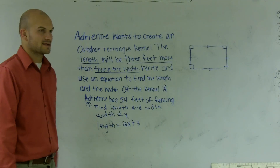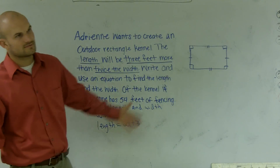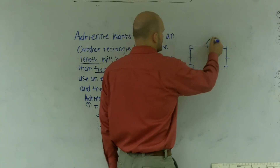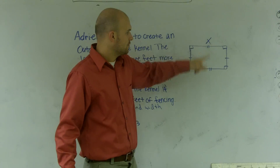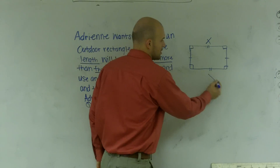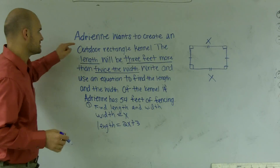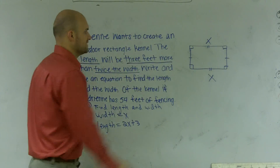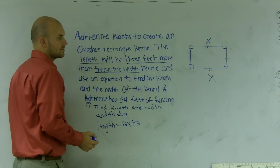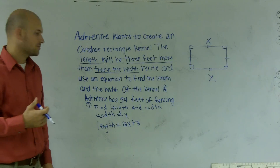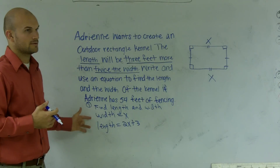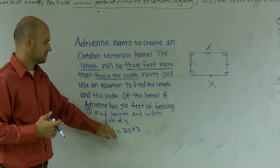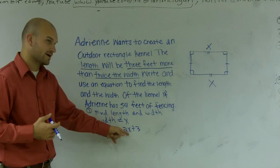The width is equal to x. So we'll say the top is x, and if the top is x, the opposite side also has to be x, because a rectangle has the same opposite sides. This is a rectangle kennel — it's fencing. So if the top and bottom are both x, what does the length have to be on the sides? It's twice x, which is the width, plus three. So the sides are 2x plus three.